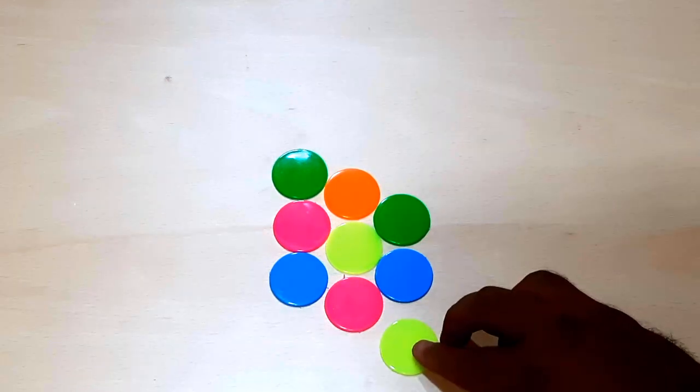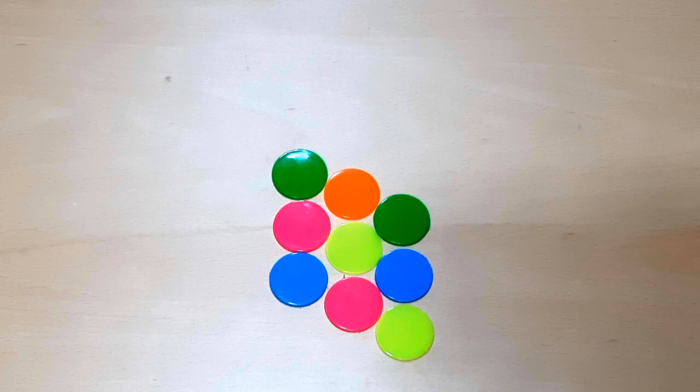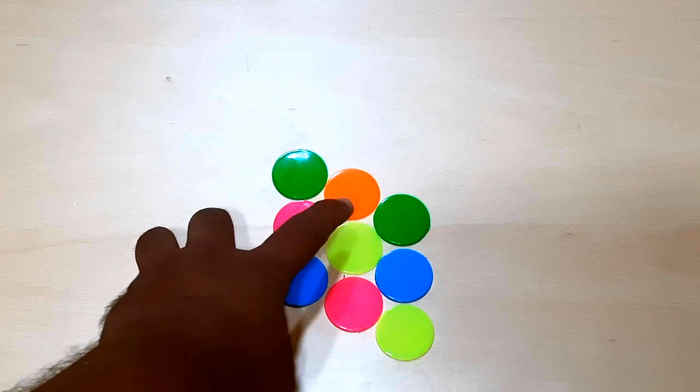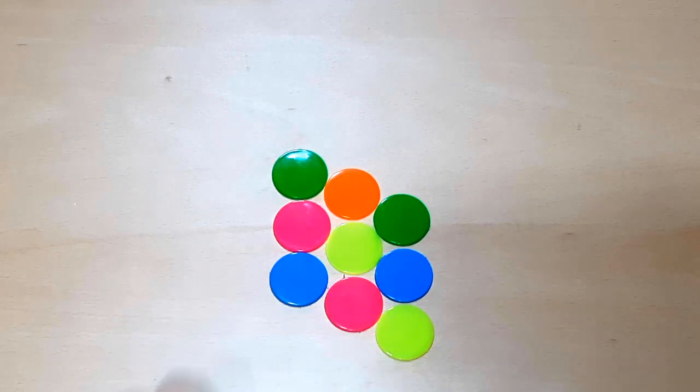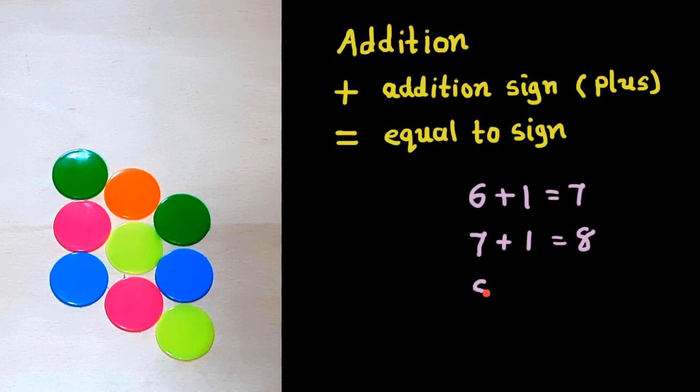Let's add one more coin. Now how many coins are there? 1, 2, 3, 4, 5, 6, 7, 8, 9. Now we have 9 coins. 8 plus 1 is equal to 9.